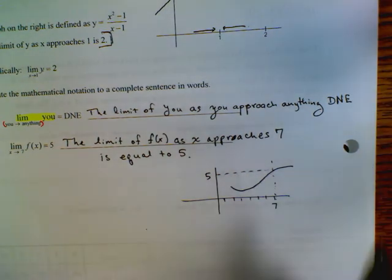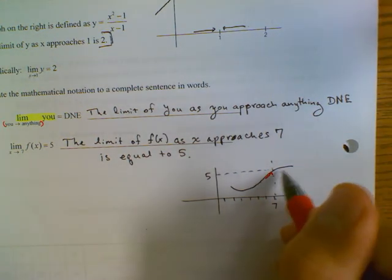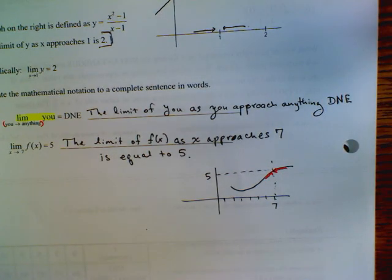So it's just saying that on the left side of 7, it's approaching 5, and on the right side of 7.